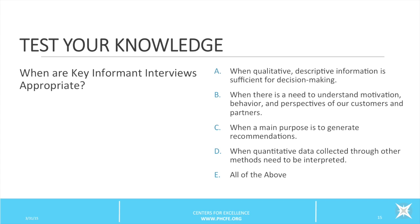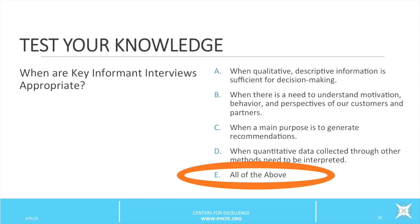Let's test your knowledge. When are key informant interviews appropriate? A — when qualitative, descriptive information is sufficient for decision making. B — when there is a need to understand motivation, behavior, and perspectives of customers and partners. C — when a main purpose is to generate recommendations. D — when quantitative data collected through other methods needs to be interpreted. Or E — all of the above. The answer is E, all of the above. Great job!